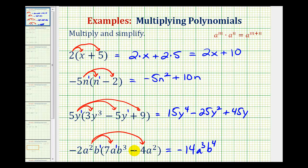And then here we have a negative times a negative, so it's going to be positive 8, a⁴b.